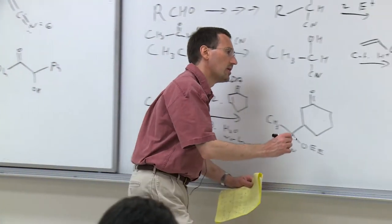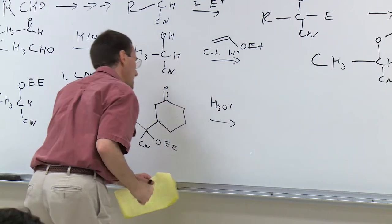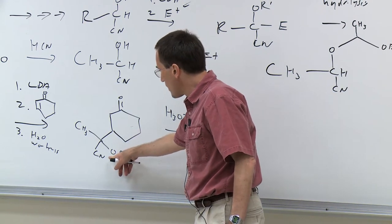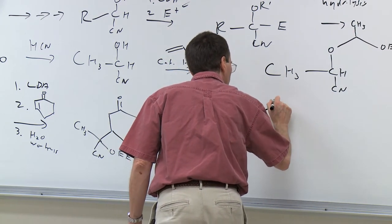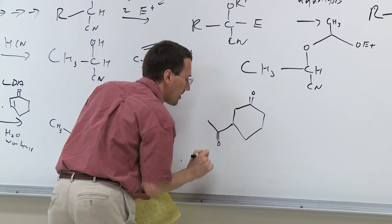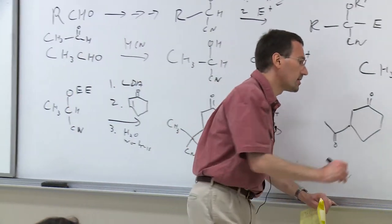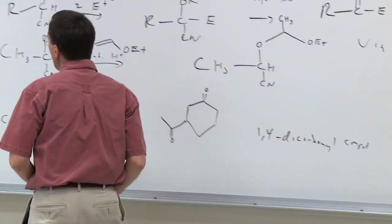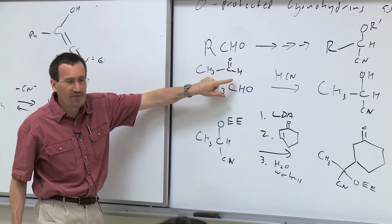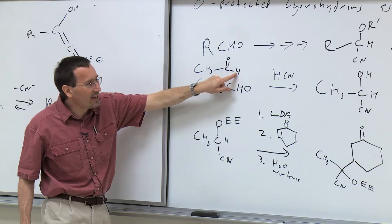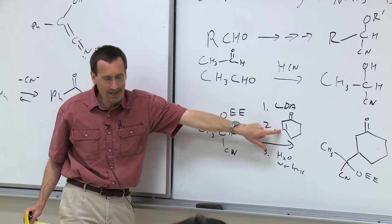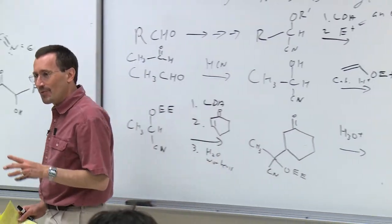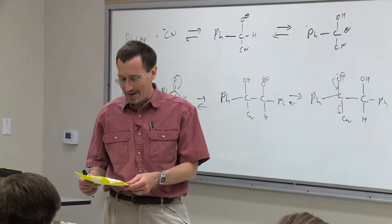Upon treatment with aqueous acid like HCl and water, you hydrolyze the acetal of the ethoxyethyl group. The cyanohydrin breaks down and the overall result is a 1,4-dicarbonyl compound. This is the effective procedure of essentially pulling off the aldehyde proton of acetaldehyde and doing a Michael addition to cyclohexenone to give the 1,4-dicarbonyl—except without these machinations, there's no way to actually achieve this.